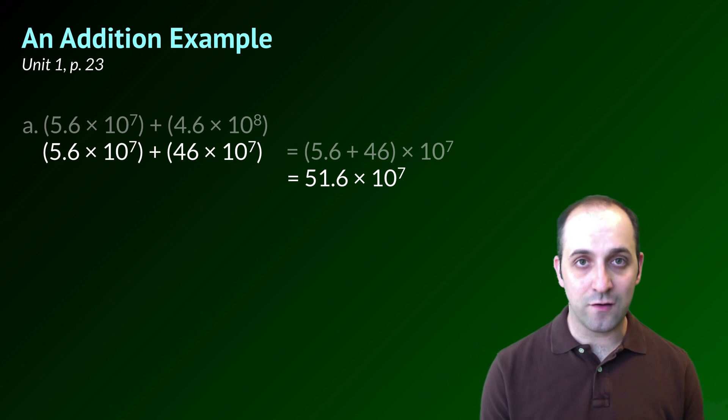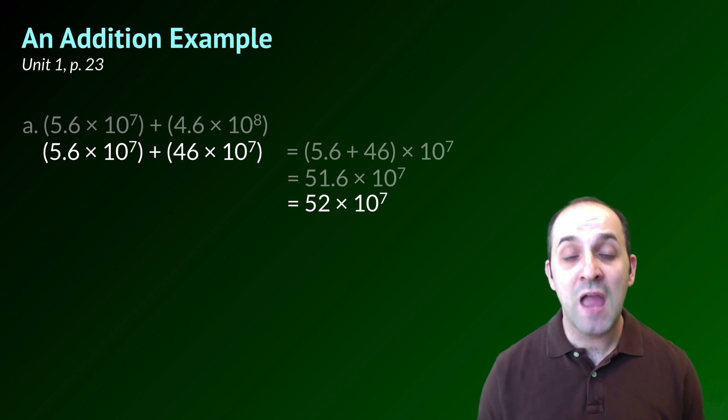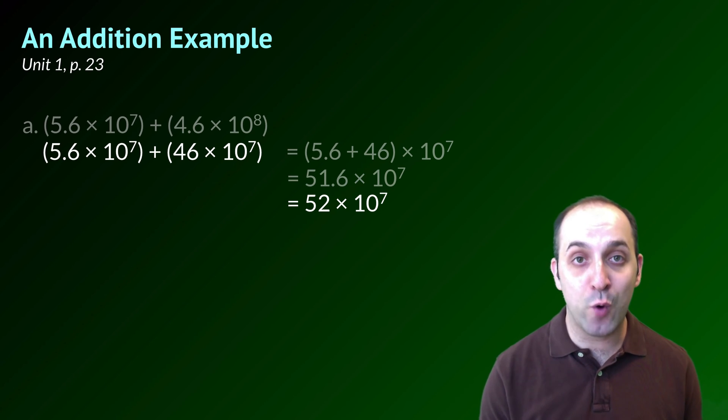But remember, this isn't the best answer. When we add two terms together, our answer can only be as precise as our least precise term. 46 is precise to the 1's place. 5.6 is precise to the 10ths. Our answer needs to be rounded off to the 1's place. This is going to become 52 times 10 to the 7. And of course, we're still not done if we're asked to put our number back into scientific notation, because our number is not currently in scientific notation. I'm going to have to make 5.2 ten times smaller, which means I'm going to have to make my exponent 10 times larger. And so the best answer that I can record for this operation is going to be 5.2 times 10 to the 8th power. Take a moment and write down any questions that you have, and when you're ready, we'll move on.